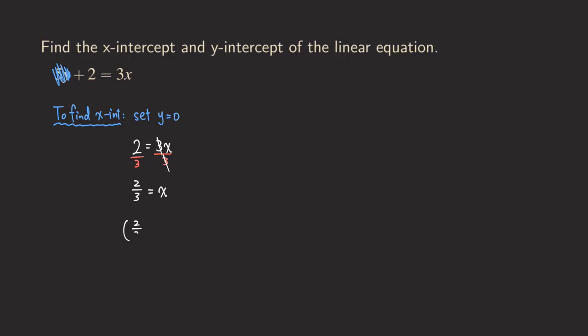The x-intercept is two over three, because that is the x value. And then the y-value would be zero in this case. So our x-intercept for this equation is (2/3, 0).